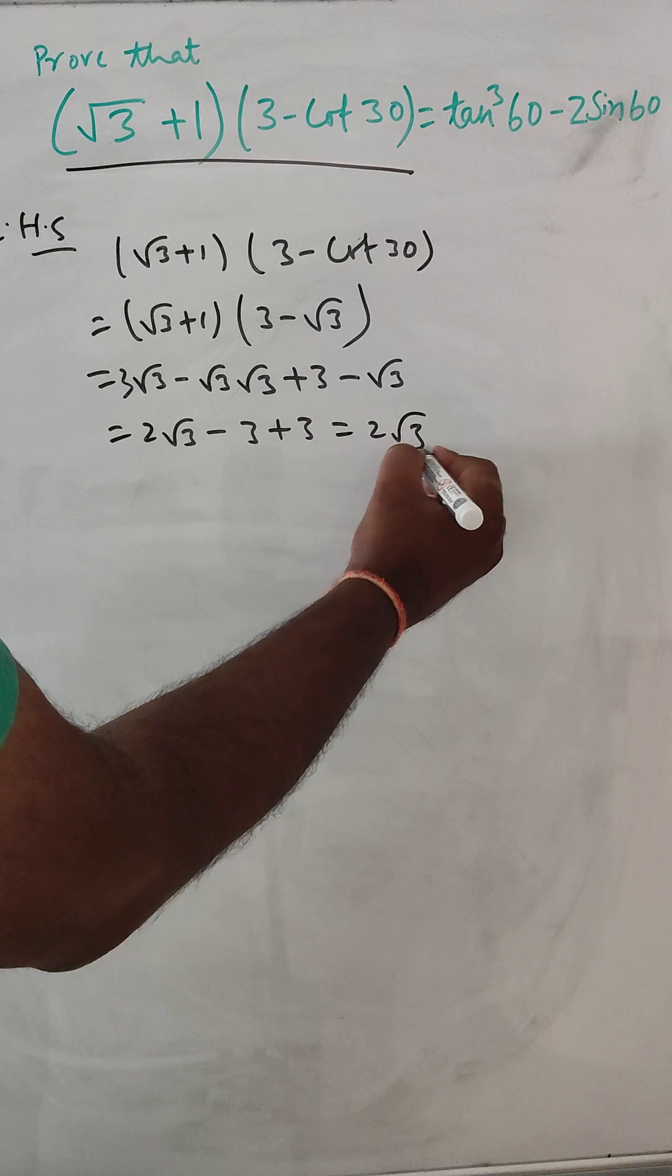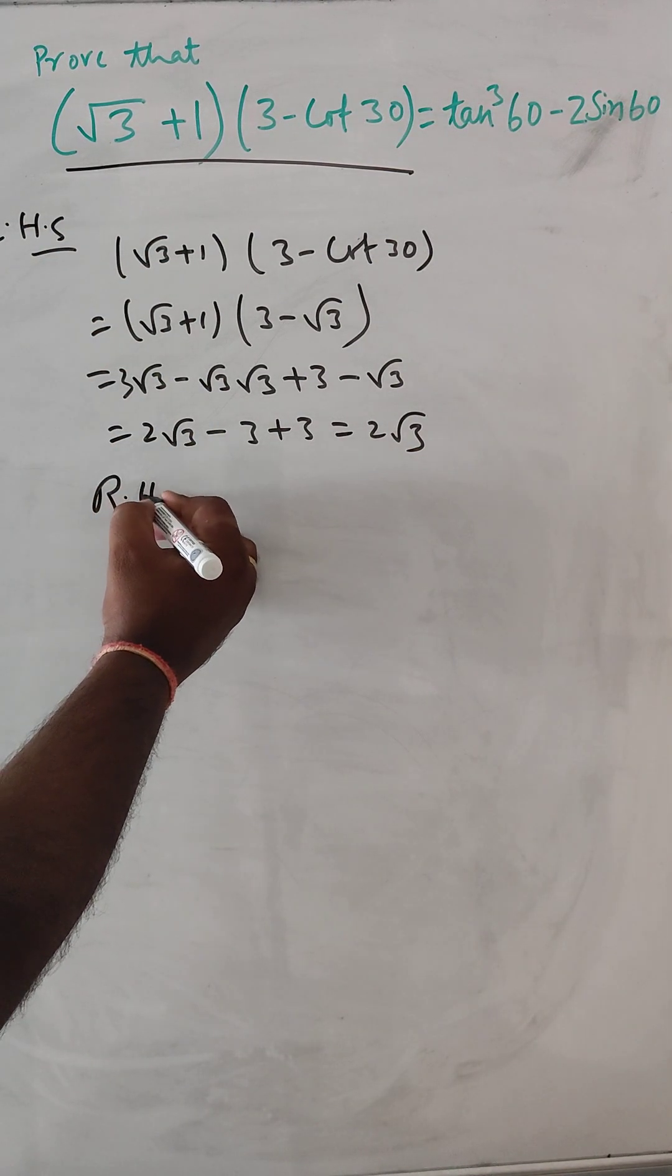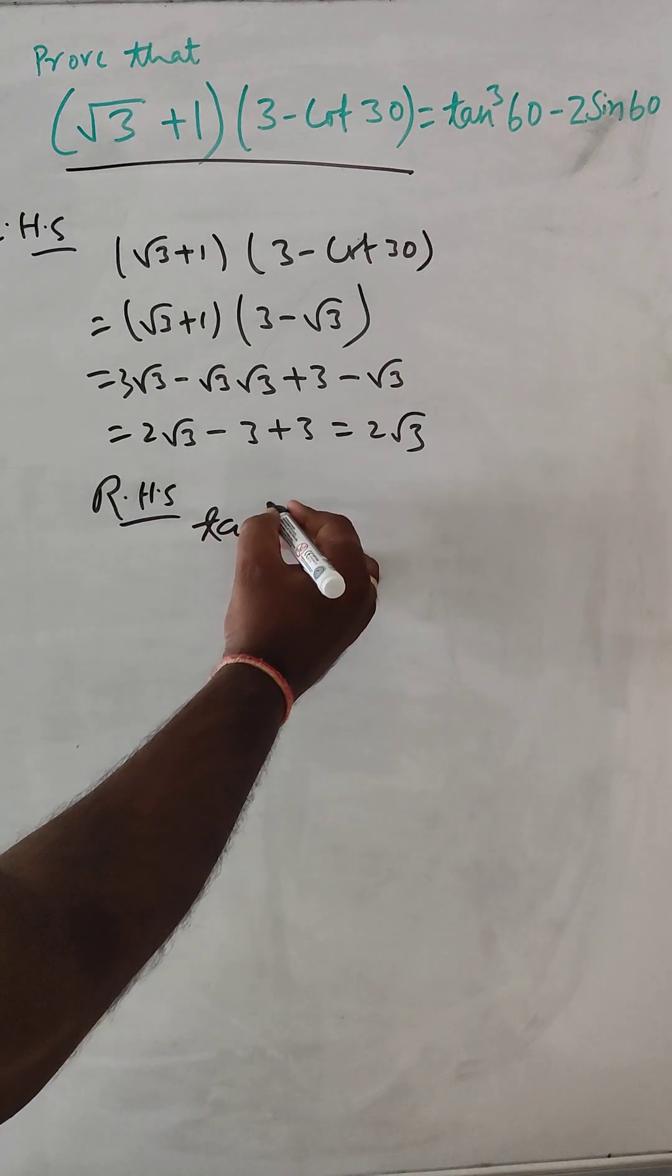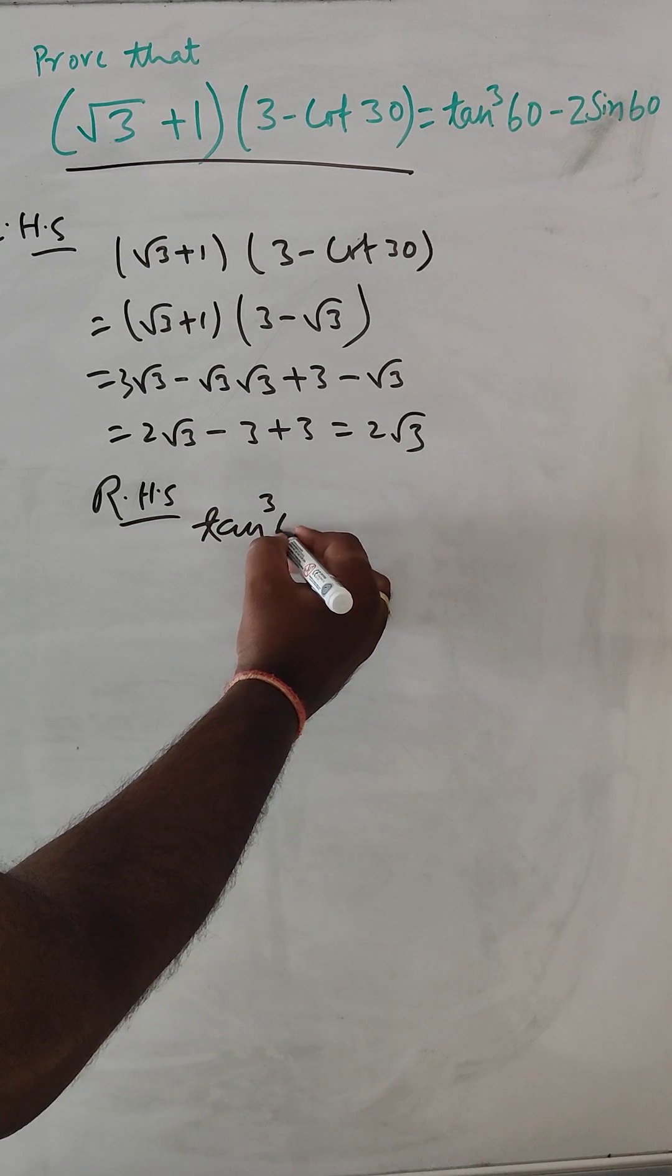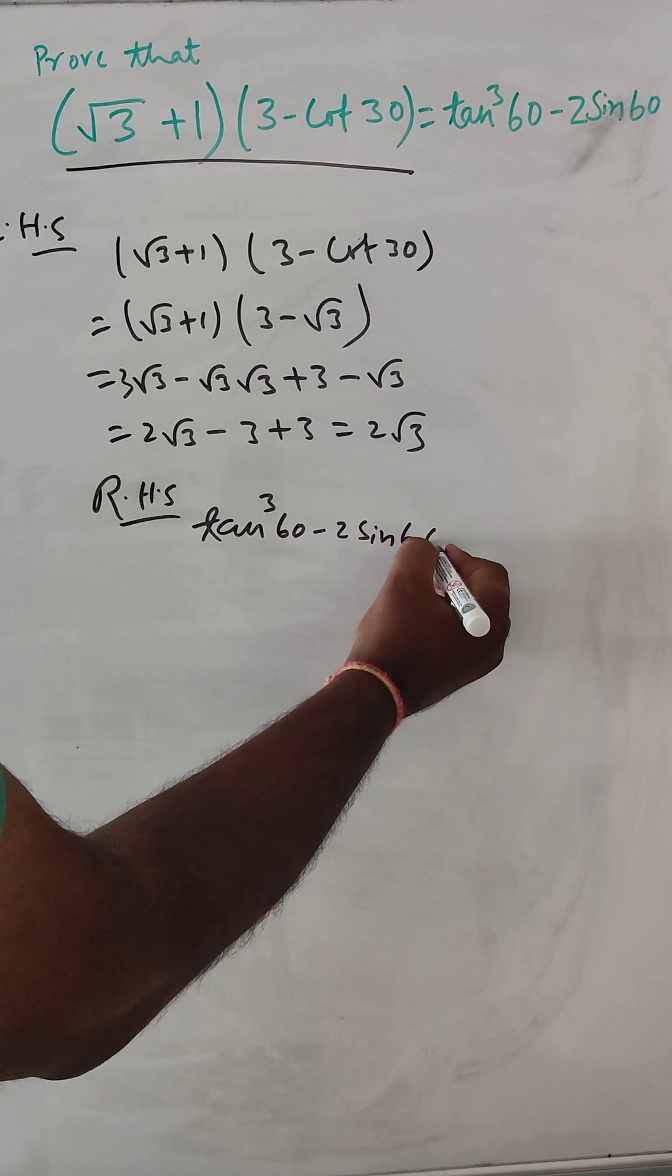So we get 2 root 3 from LHS. From RHS what we get is tan 60 minus 2 sin 60.